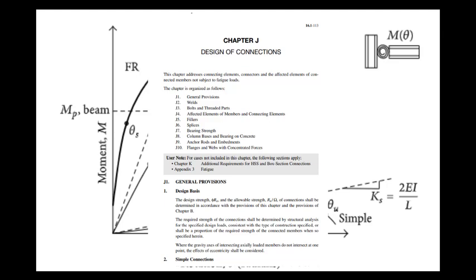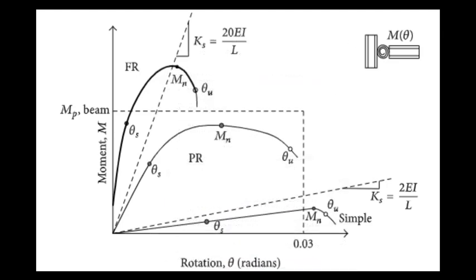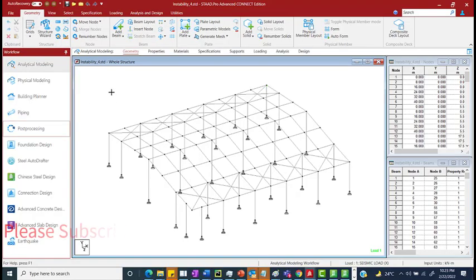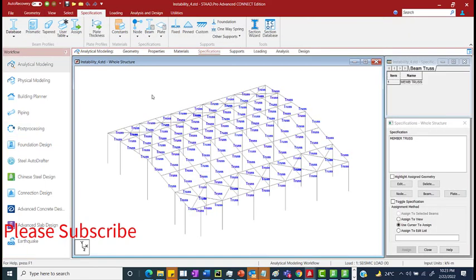Now in STAAD this feature is mainly helpful in tackling the instability like condition in structure. For example when we define the shear connection in STAAD we specify the hinge or pin connection meaning the moments are fully released. Now this could be directly done by assigning the truss specification to those members because truss member is essentially supposed to take only the axial load and it will discard the moment and the shear force.